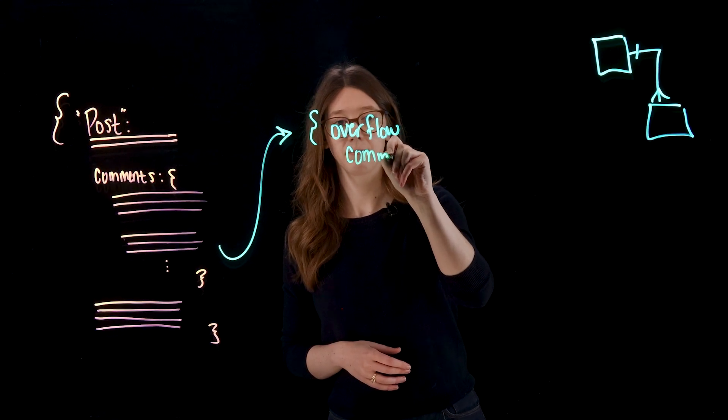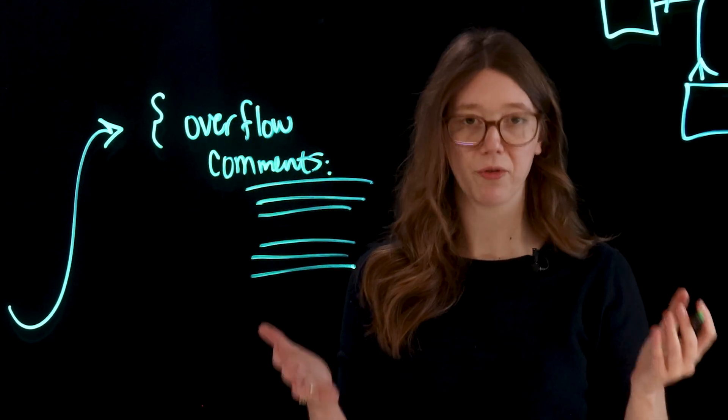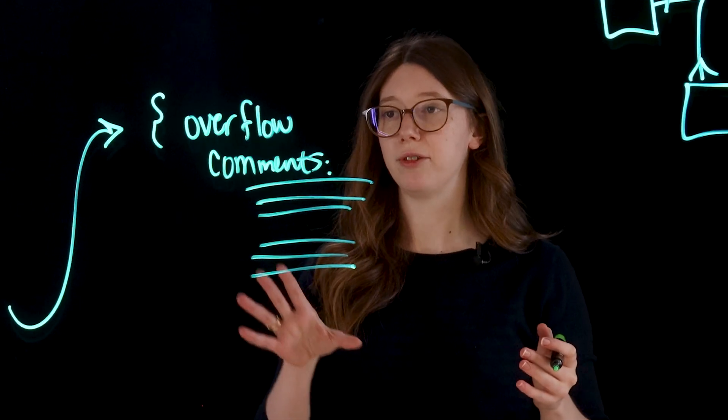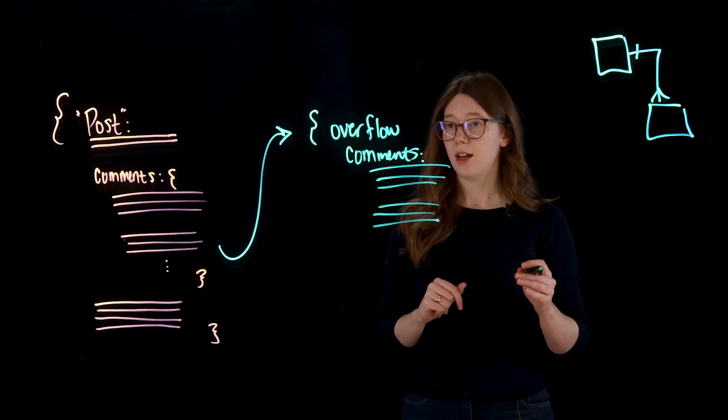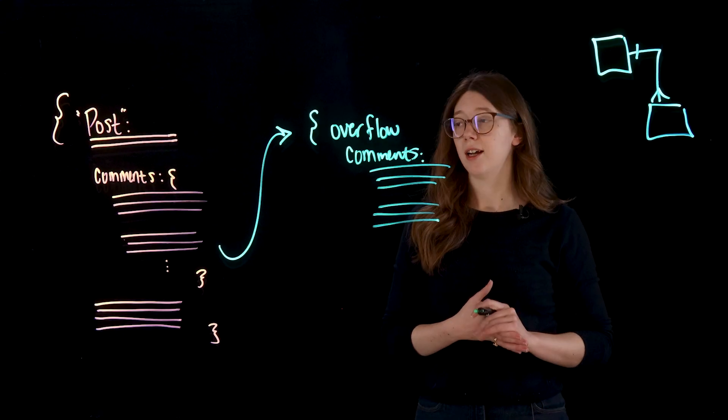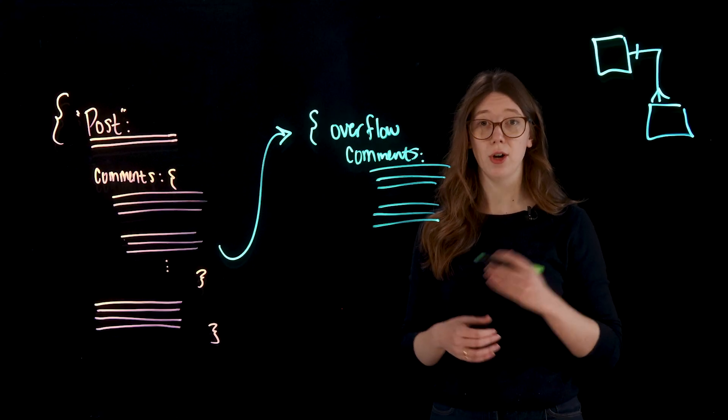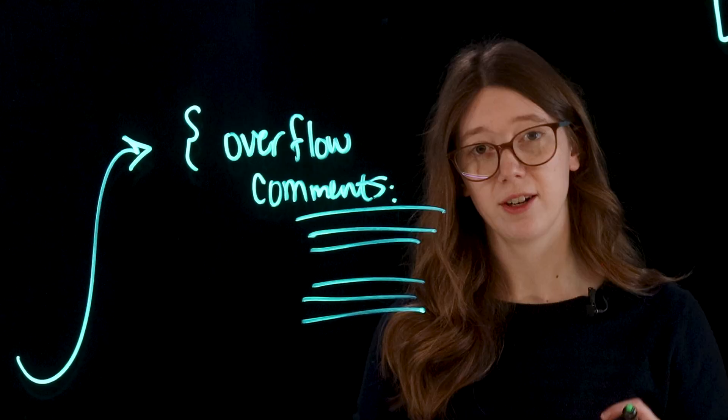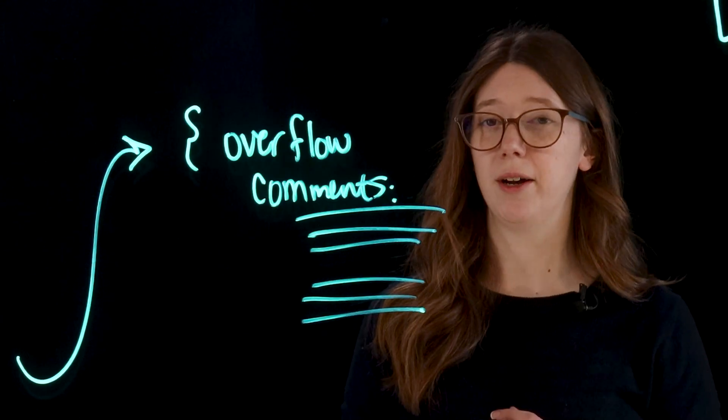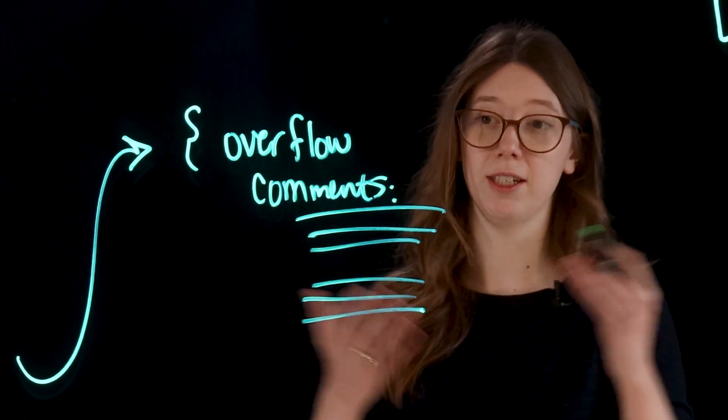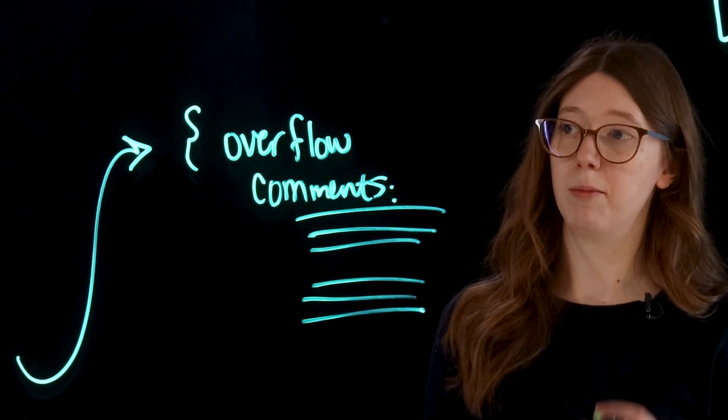We can call this overflow. From here, you'd have the exact same structure with your comments. We can decide where this threshold is. For example, say we don't want to display more than 50 comments at once. Anything over 50, so 51, that's where you create this overflow object. This allows you to optimize most posts because they aren't hitting this overflow amount, but we have control for exceptional cases.